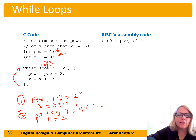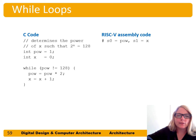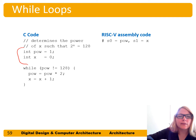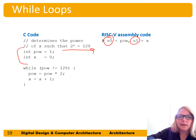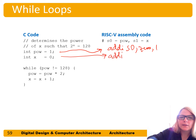At that point, x is going to be equal to 7. When power equals 128, the condition is met and we're done with the loop. To write this in assembly, we first initialize the variables. Power is in s0, x is in s1. We initialize using add-immediate: addi s0, x0, 1 for power equals 1, and addi s1, x0, 0 for x equals 0.